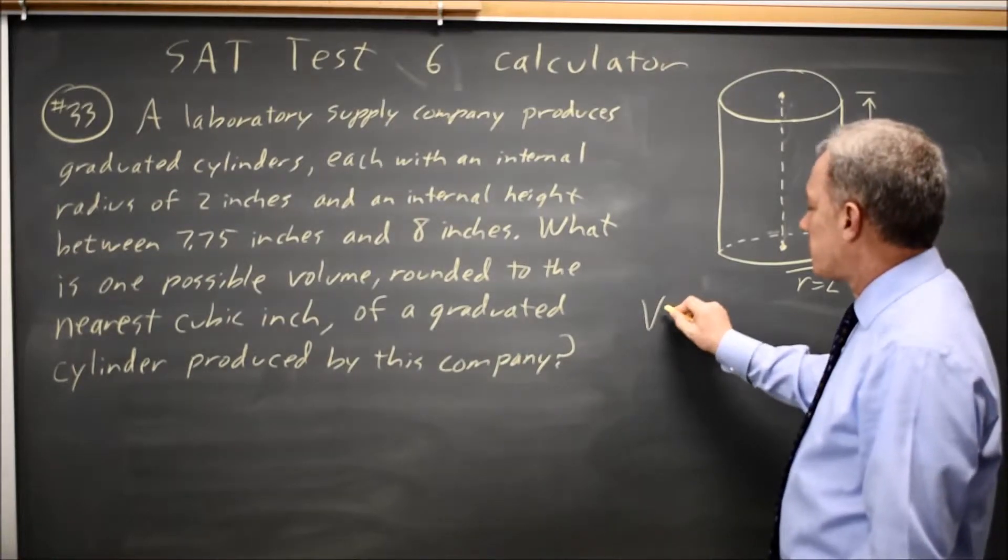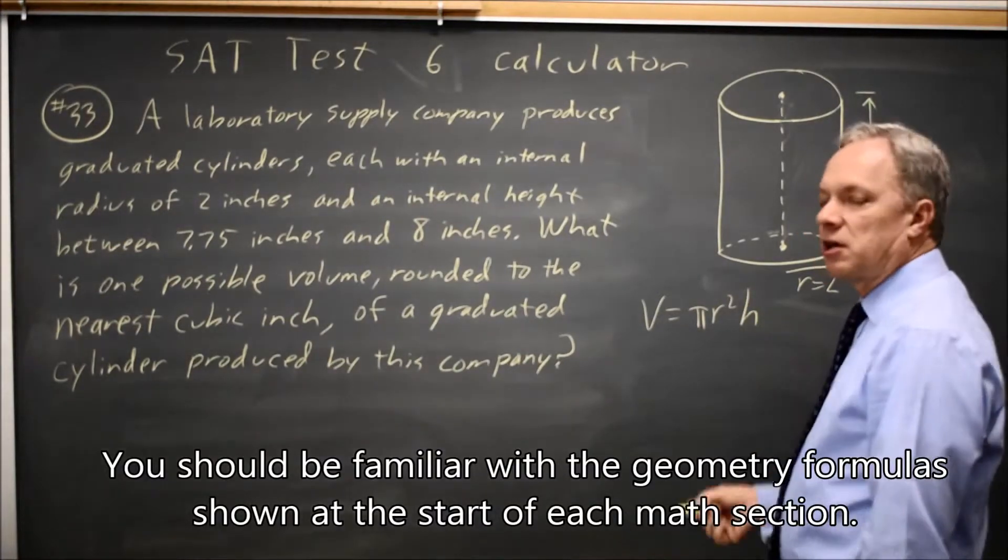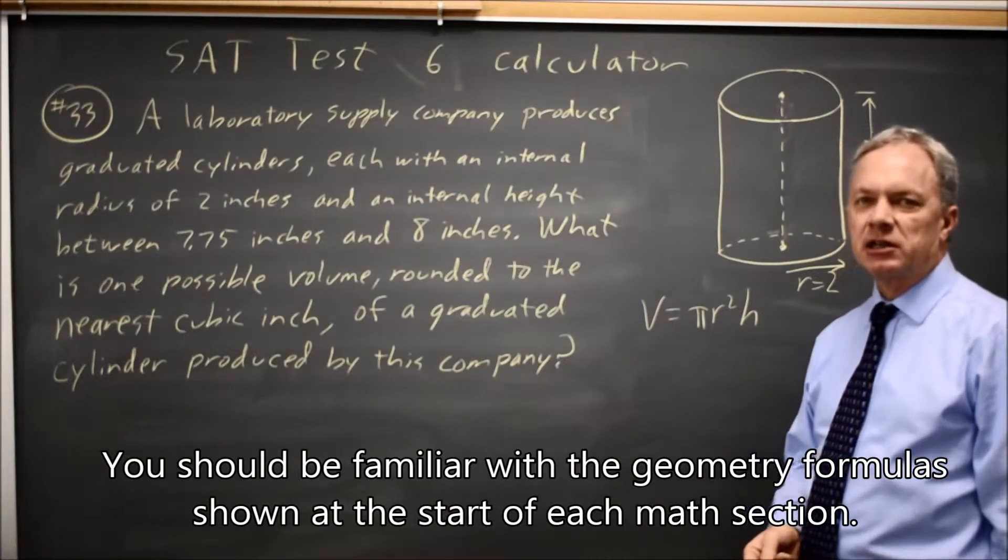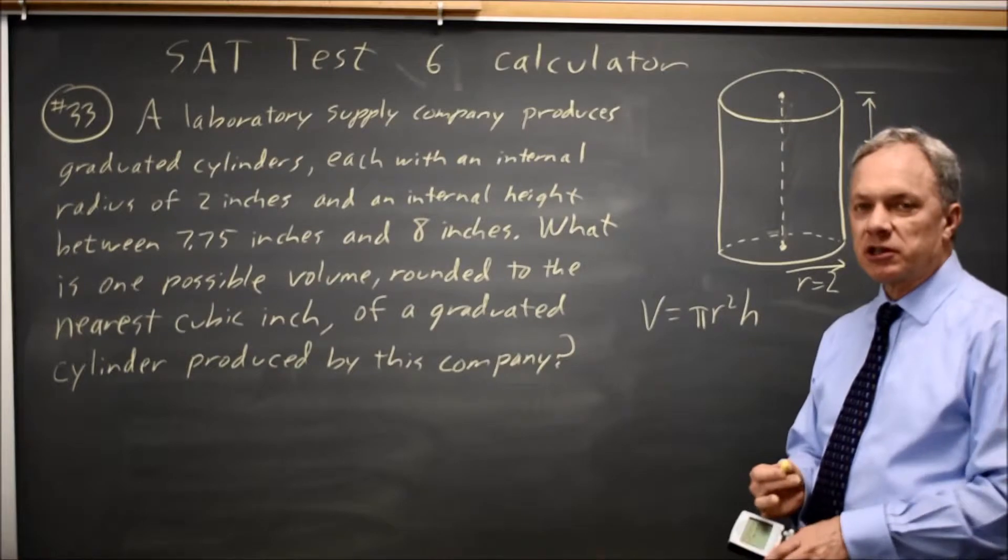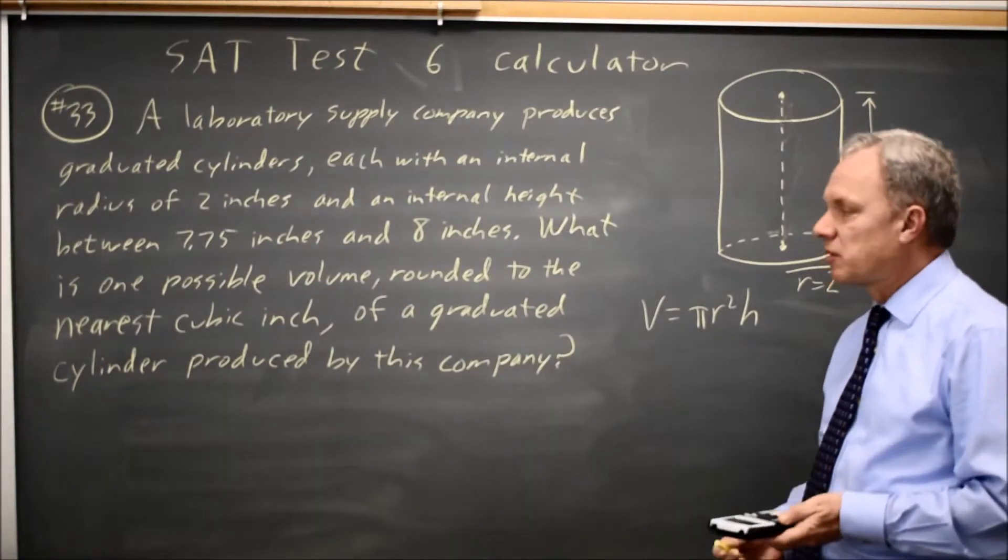We're given the formula V equals pi R squared H. Not in this problem, but at the beginning of the section, so if you don't remember the volume of a cylinder, you can look it up, although it's better to know this because they almost always ask it.